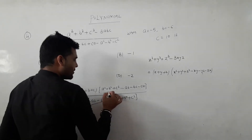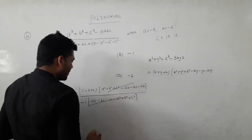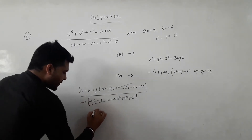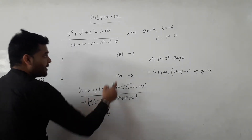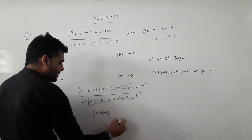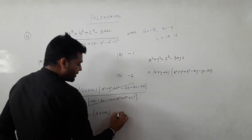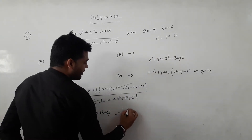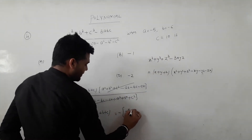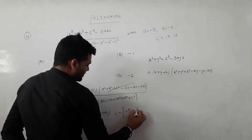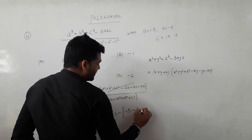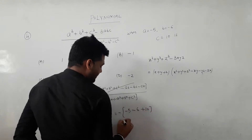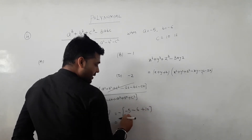After cancellation, we get minus of a plus b plus c, or a plus b plus c value. Here a equals minus 5, b equals minus 6, and c is 10, so plus 10. That gives us minus 7 plus 10.